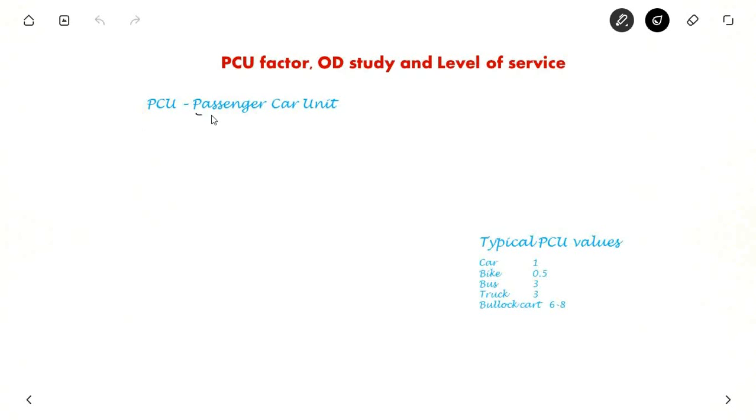PCU is passenger car unit. If you see on a road, different types of vehicles pass. Sometimes car passes, then two-wheeler passes, then big trucks passes, sometimes bullock cart also go. So these vehicles are of different dimensions and speed. So you cannot represent them by vehicles per hour. It will give you a wrong picture because bullock cart will go very slowly and car will go very fast.